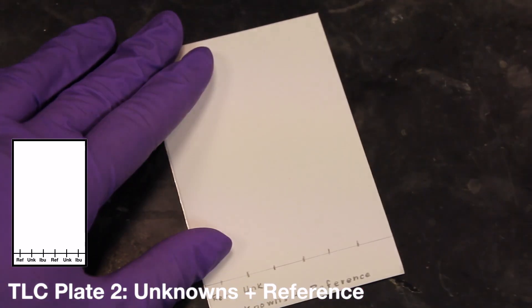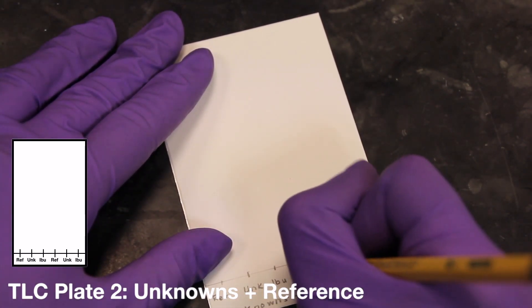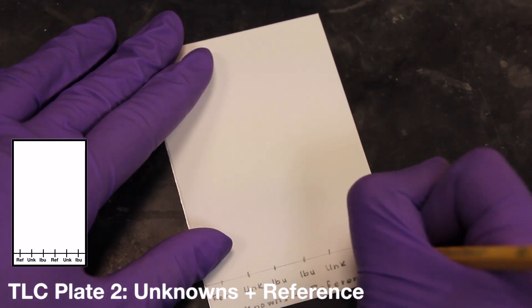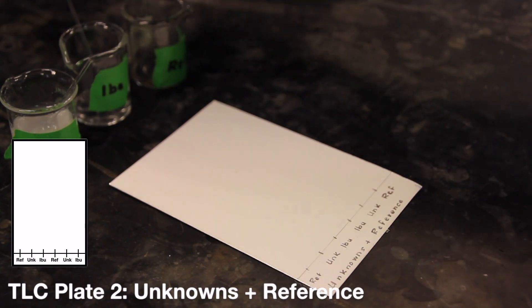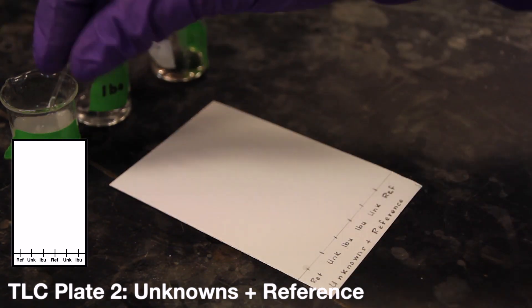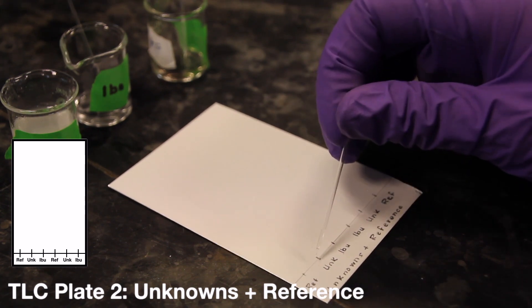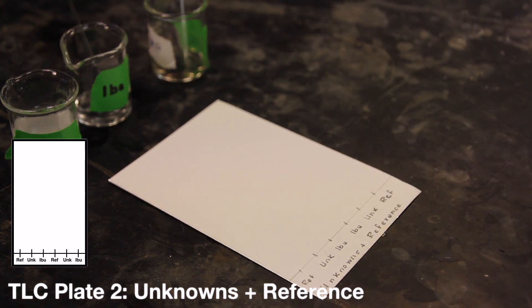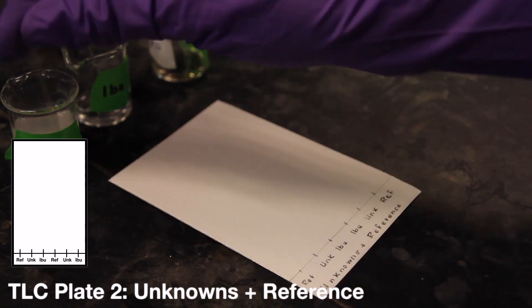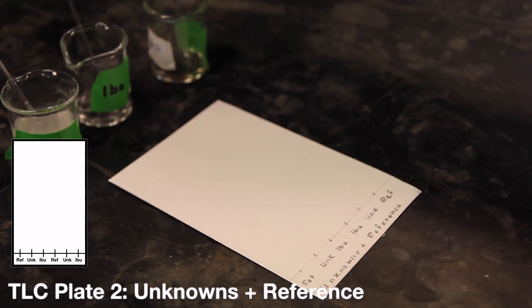Next, you will be working with your second TLC plate. This plate will ultimately contain your unknown analgesic and reference mixtures. Begin by spotting the reference mixture, which contains 4 of the compounds under analysis: acetaminophen, aspirin, caffeine, and salicylamide. Also spot ibuprofen, since it is not a part of the reference mixture, and the unknown solution that you have just made.